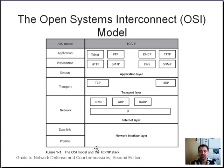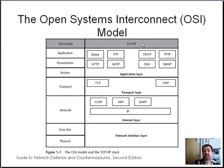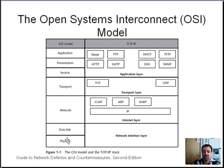The layers start at the most specific, closest to the wire — the physical layer — then data link, network, transport, session, presentation, and application. The TCP/IP model is another abstraction that explains networking from a slightly different point of view. It combines the physical and data link layers of the OSI model into a single layer called the network interface level.